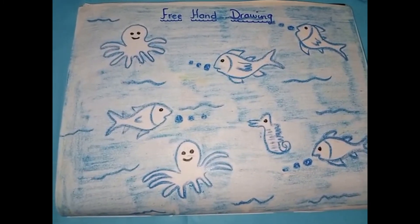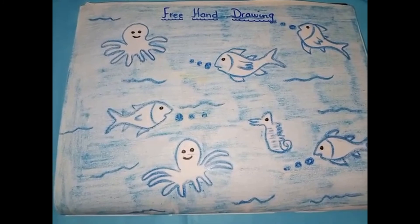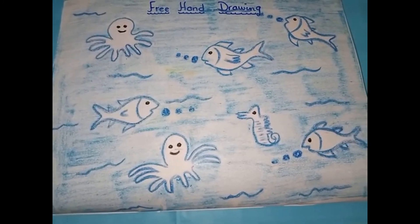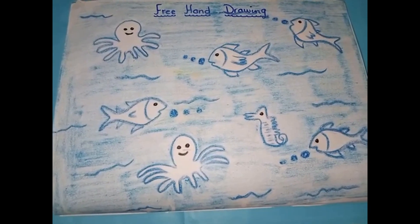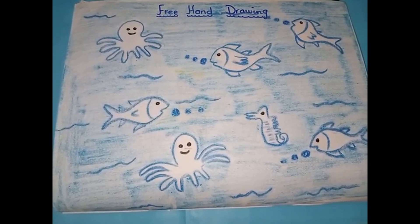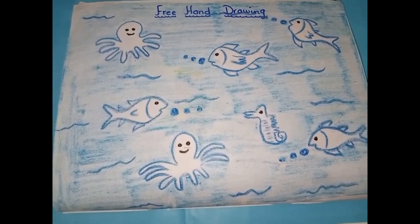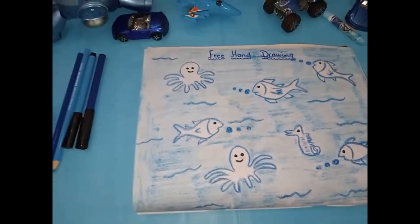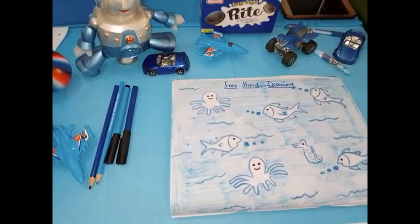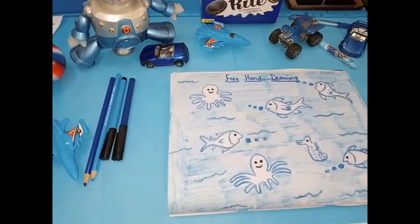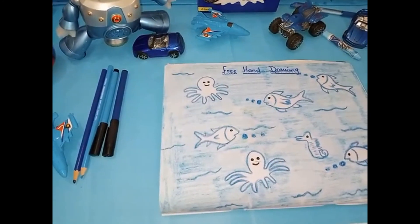This way we will complete our work. I have prepared a sea view. First of all I have made water and then some fish and octopus. You will also create your drawing and you will also complete your coloring in it. So I have made a sea view so that you take an idea and complete your drawing.